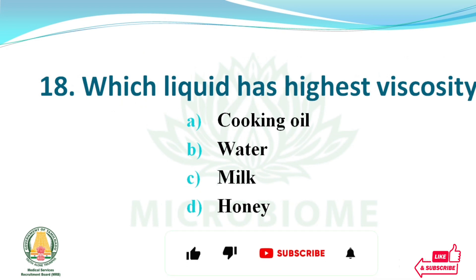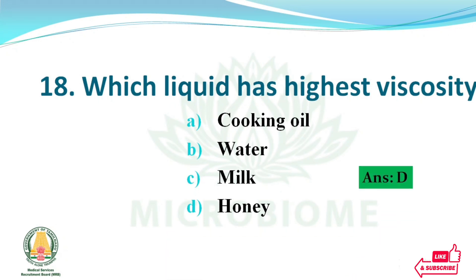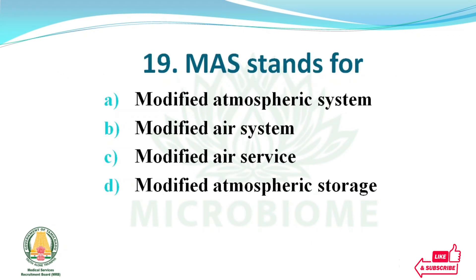Which liquid has the highest viscosity? Options: cooking oil, water, milk, honey. The right answer: option D, honey. MAS stands for — options: modified atmospheric system, modified air system, modified air service, modified atmospheric storage. The right answer: option D, modified atmospheric storage.